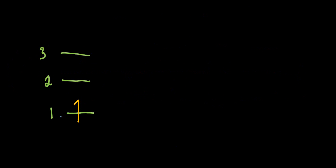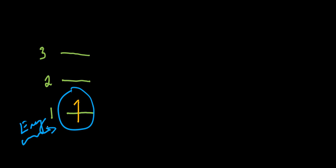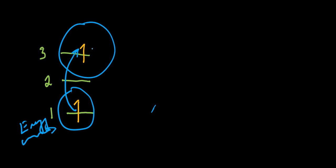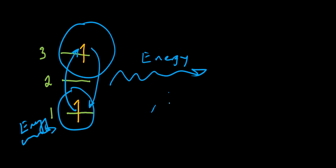If we have an electron that's in the ground state of an atom and some energy comes in from the outside — the energy could be in the form of light, heat, friction, or electricity — that electron has the possibility of jumping to a higher energy state. This is now an excited state for the electron rather than a ground state. And when it jumps back down, energy is always emitted in the form of light.